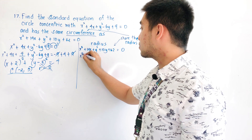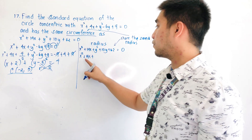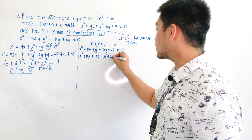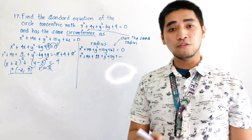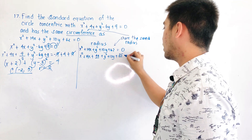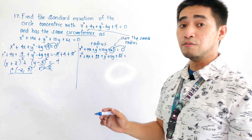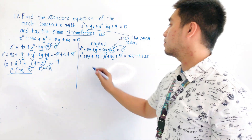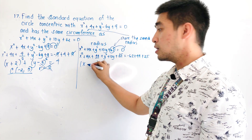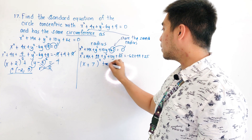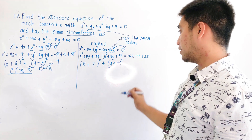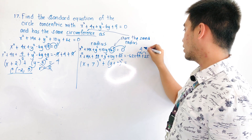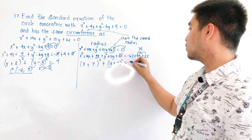Let us complete the square. x² + 14x + 49 (since 14/2 = 7, and 7² = 49), plus y² + 10y + 25 (since 10/2 = 5, and 5² = 25), equals -62 + 49 + 25. Factoring: (x + 7)² + (y + 5)² = 74 - 62, which gives us positive 12.